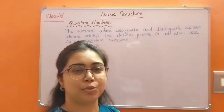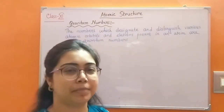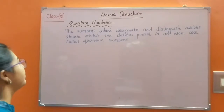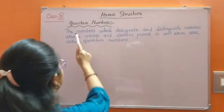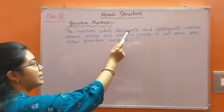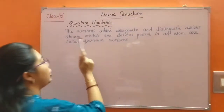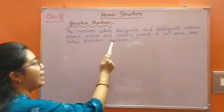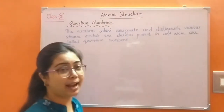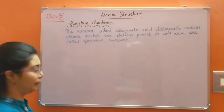In this class, we will study about quantum numbers. What are quantum numbers? The numbers which designate and distinguish various atomic orbitals and electrons present in an atom are called quantum numbers.